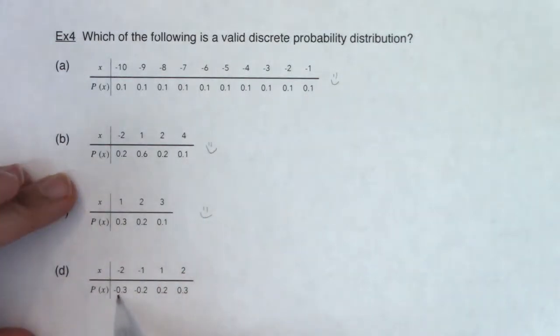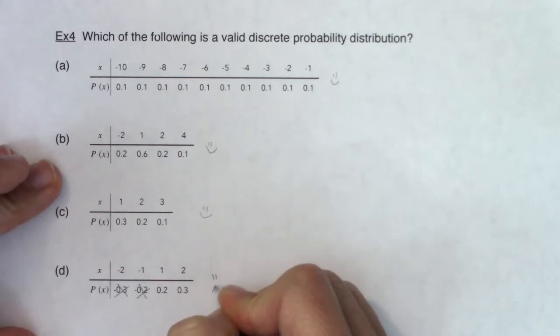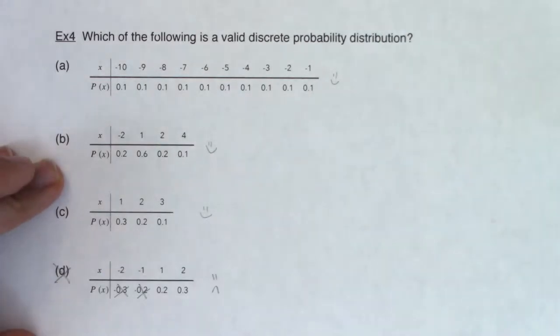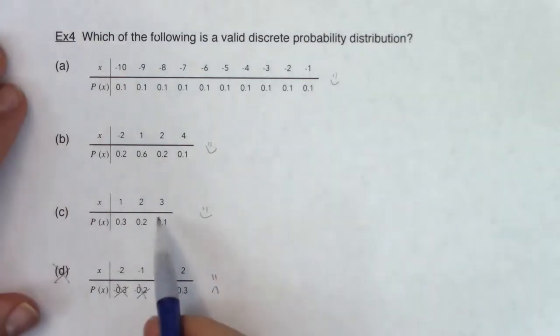But if you look down at D, something changed. You see the negative 0.3 and the negative 0.2. That is not allowed, so D can get ruled out. D does not meet the first property of being a legitimate PDF. So we've ruled out D, so that gets it down to A, B, and C. And the second property of being a legit PDF is that these numbers on the bottom here have to total out to 1.